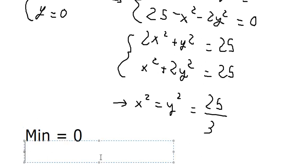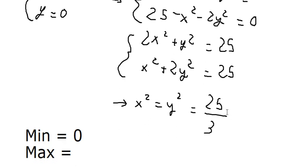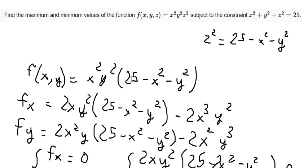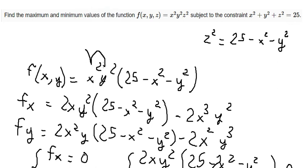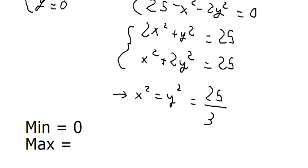Now for the maximum: if we substitute 25 over 3 into the function for x squared, y squared, and z squared, we get the maximum value, which is 15,625 over 27.